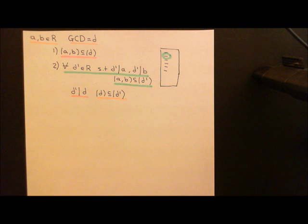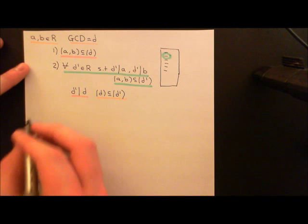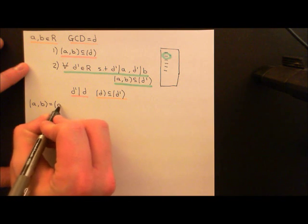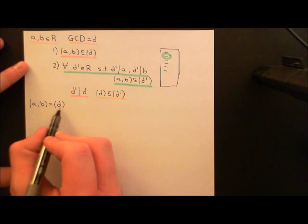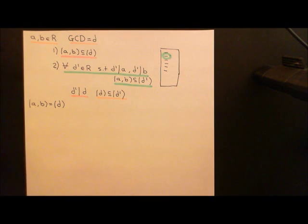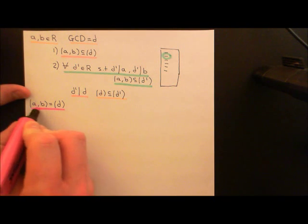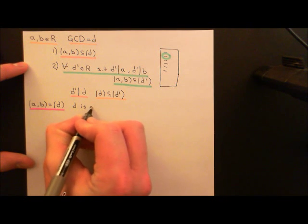The second thing to say is a nice way that you can be sure that a common divisor is a greatest common divisor. If you take two elements A and B in your commutative ring R and generate the ideal generated by A and B, and it just so happens that this equals the principal ideal generated by some element D, then D is going to be a common divisor — because the principal ideal generated by D will contain the ideal generated by A and B.